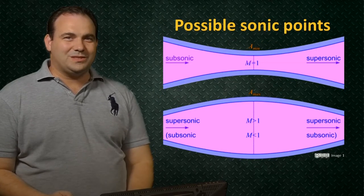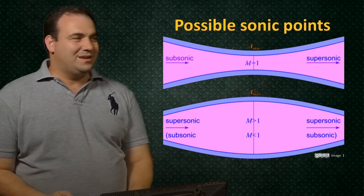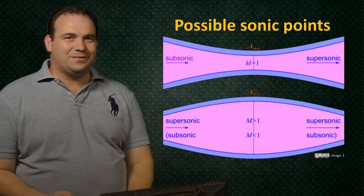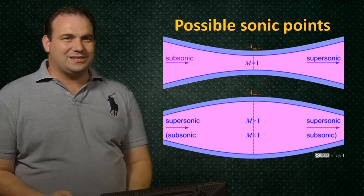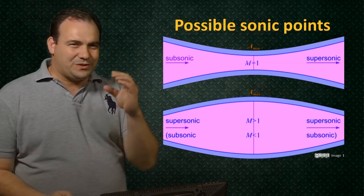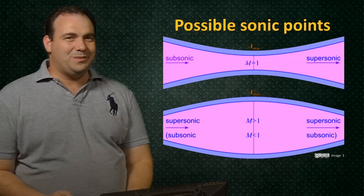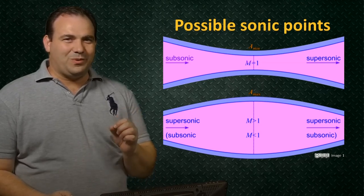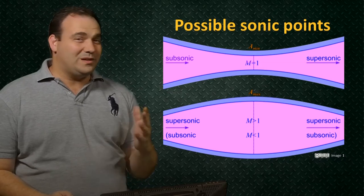Let's consider these two possible sonic points. First, let's look at the case where we have an area minimum in a nozzle that converges and then diverges. If we assume the flow starts off subsonic, then the converging section of the nozzle is going to accelerate it towards Mach 1. If the area shrinks enough, the flow could reach Mach 1 at the area minimum, and once the flow has reached the sonic point, the diverging area downstream can then act as a supersonic nozzle, accelerating the flow well beyond Mach 1.